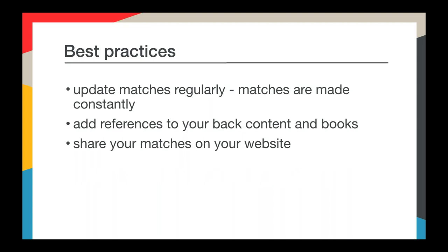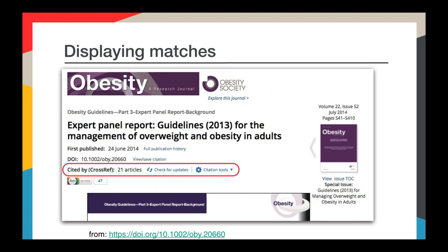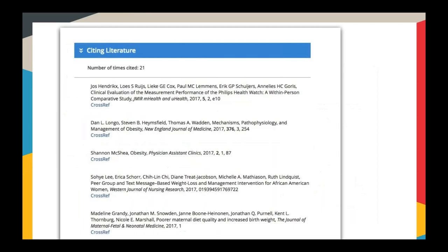Our best practices for cited-by: update your matches regularly — it's not a one-time update, and cited-by counts usually only go up. We recommend adding references to your back content and books. Most members focus on current content when getting started, but should apply the cited-by service to older content as well. Share your matches on your website — we provide the data but don't offer widgets or support for importing it into your site. Display matches on article pages so readers can see who is citing your content. Most landing pages feature a 'cited by CrossRef' option prominently, with matches formatted as citations that link to the CrossRef DOI, driving traffic to the citing member's content.